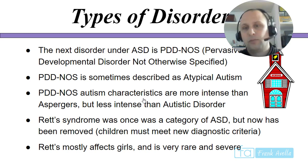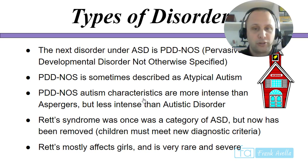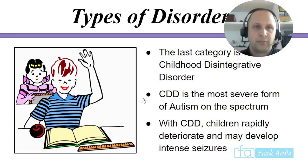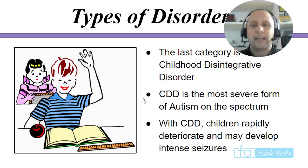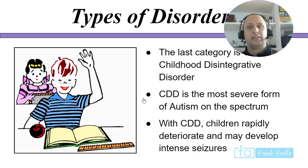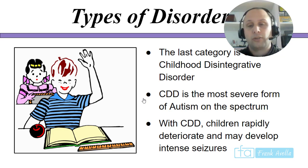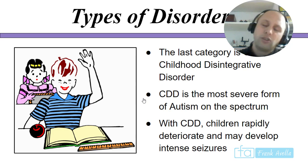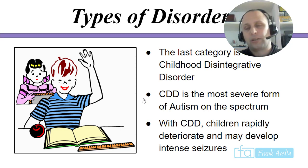Rett syndrome was once a category of ASD but has been removed; children must meet new diagnostic criteria. Rett mostly affects girls and is very rare and severe. The last category is CDD — Childhood Disintegrative Disorder — which is the most severe form of autism on the spectrum. Children rapidly deteriorate and may develop intense seizures. So we have CDD at one end and Asperger's at the other, and if you're teaching students with ASD, you need to know where they are on the spectrum.